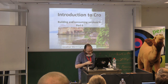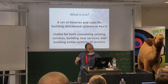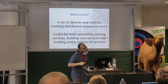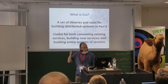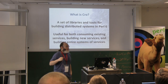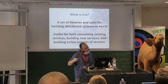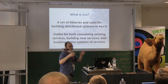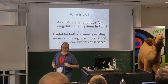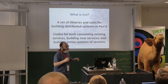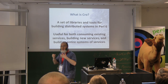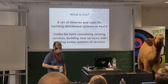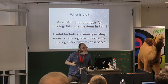Crow is a set of libraries and tools for building distributed systems in Perl 6. It's useful both for consuming existing services, for building new individual services, and for building entire systems. Of course, what's good for building a web service is good for building a web application as well — including single-page client-side applications pulling from a REST API.